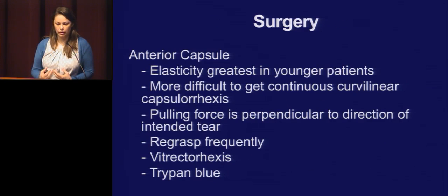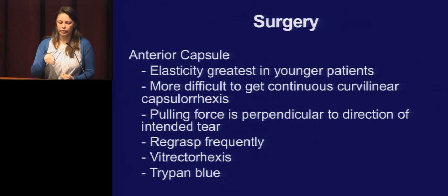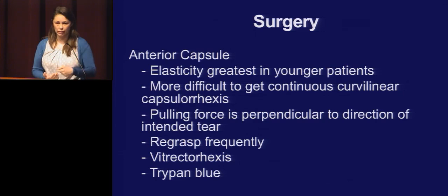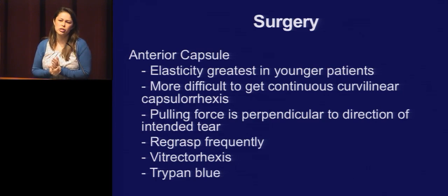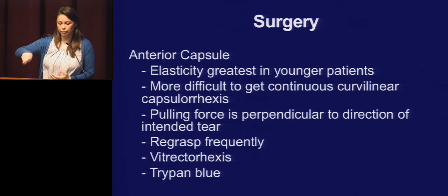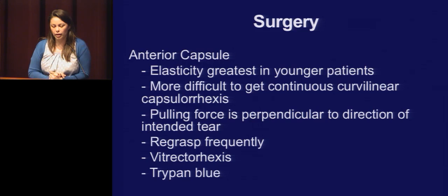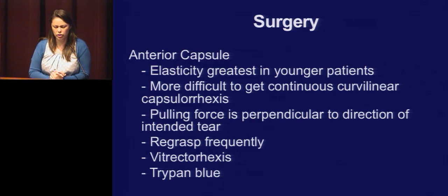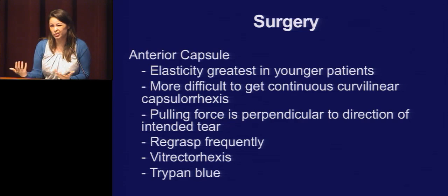In surgery, the anterior capsule — the younger the patient, the more elastic and tough the capsule is. It's more difficult to do a continuous curvilinear capsulorrhexis, and you want to re-grasp frequently. I'm constantly re-grasping to grasp right where the split is. Sometimes you can use the vitrector to do this. For patients you're going to leave aphakic, you can do everything with the vitrector — just make the anterior capsulotomy with the vitrector without using the utrata forceps. You can also use trypan blue — I use it in every case because it just makes it easier to see.